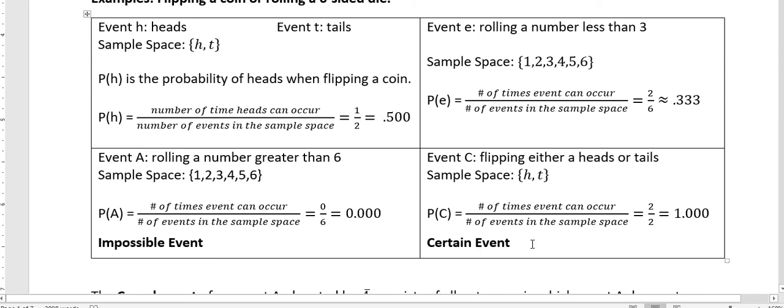And so that's considered a certain event. So we have a certain event, which means it's going to happen. There's no other way it can't happen. And an impossible event, which means it's not going to happen at all.